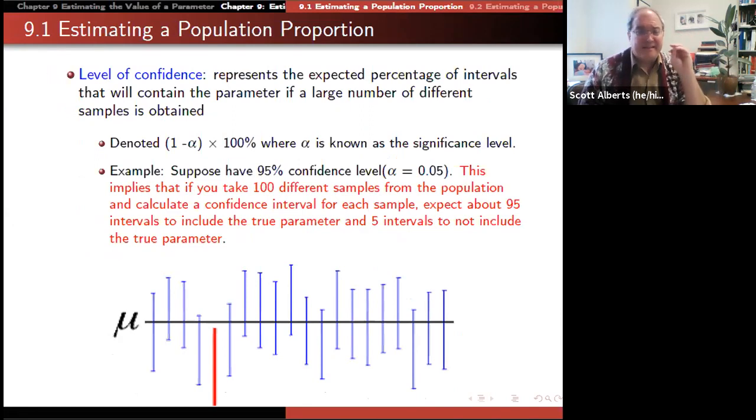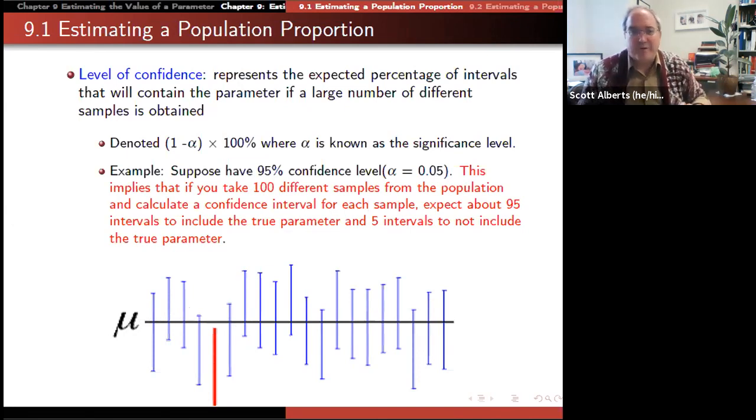The margin of error we're going to calculate using the standard error, which we talked about in chapter eight, and then a critical value, which is a number from the normal distribution. We're going to work out the probability associated with how confident we want to be in our answer. The way to think of this isn't that we're getting some measure of truth, but instead we're thinking about a sampling distribution.